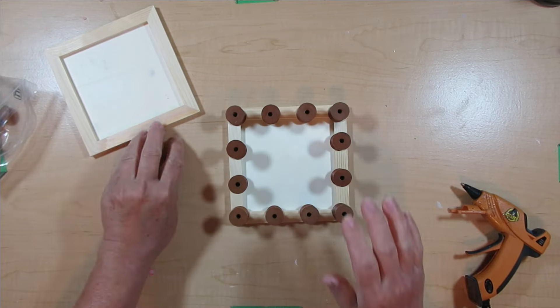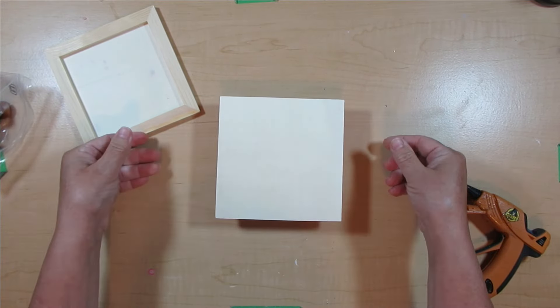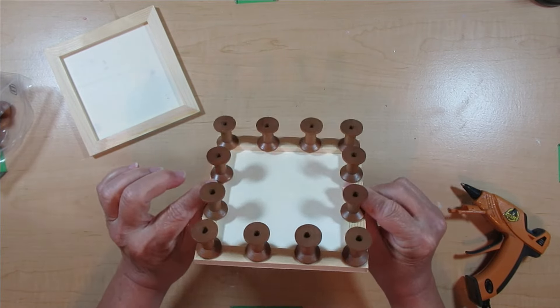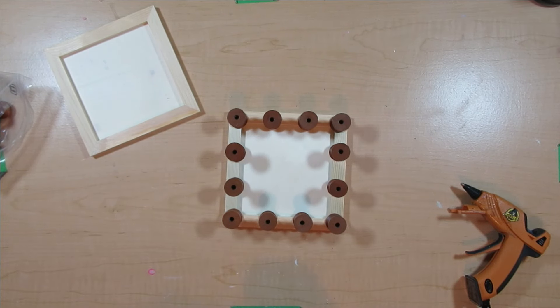Before I glued on the second little panel, I did take this outside and I did spray paint the inside, so the spindles and the inside cover, but then I didn't do the second one. So learn from my mistake and make sure you get all the pieces covered before you glue it together.